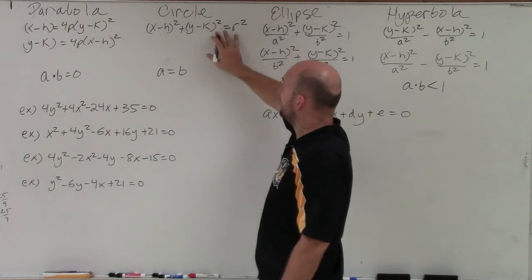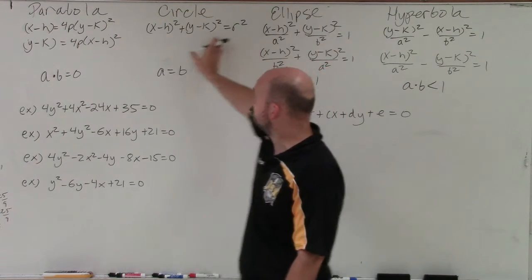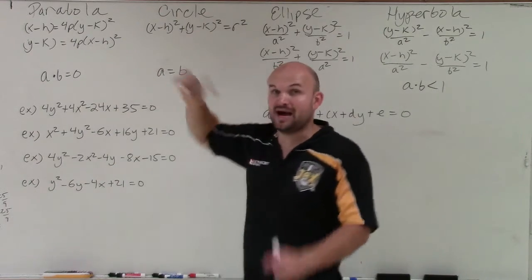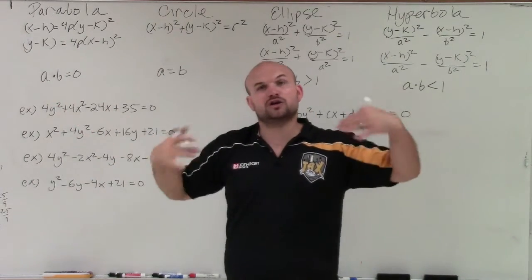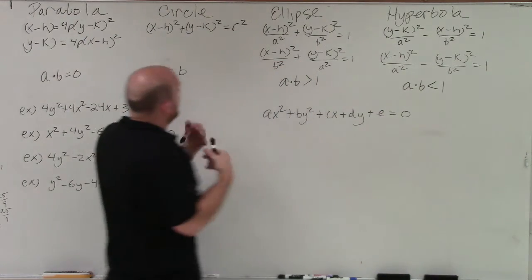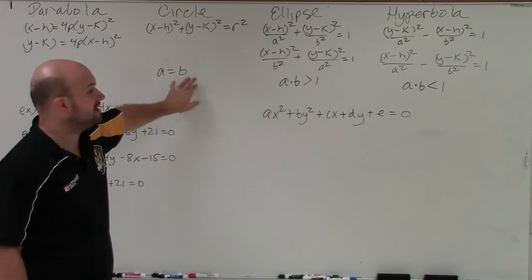In the case of a circle, remember, if we want to set it equal to 1, if I was going to divide by r² on both sides, you'd notice the coefficients of my x and my y, even once I expand them, are going to be exactly the same when you have a circle. So therefore, the coefficients of a and b are always going to be the same. That's why when a is equal to b, you have a circle.